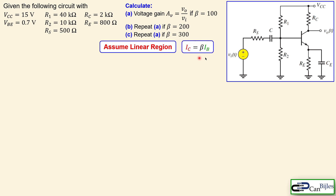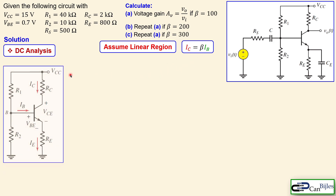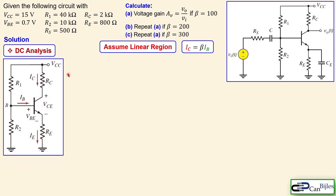The calculations required are exactly the same as in example number two. We have the voltage gain for beta = 100, and we repeat the process for beta = 200 and 300. But now we have this capacitor, so let's see what the effect of that is. We assume again linear region of operation, meaning the collector current is beta times the base current. For DC analysis, the capacitors are all open, and we consider this part of the circuit with the collector, base, emitter currents, VBE, and VCE as DC quantities.